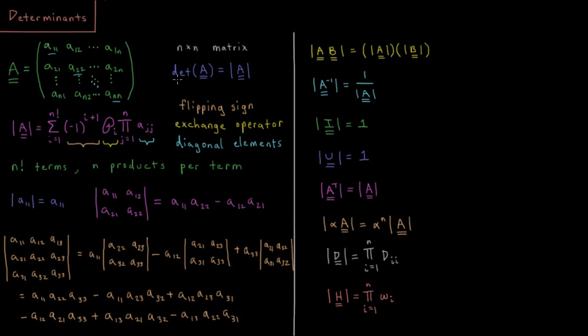We're going to define something here called the determinant of matrix A, which is sometimes indicated by the two vertical bars, which usually indicate magnitude, absolute value, something like that.